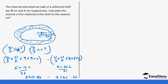We subtract the two to get the volume of the material used in the shell. So it's 3,054.86 minus 2,145.52, which gives us 909.34 centimeters cubed.